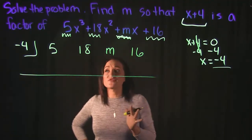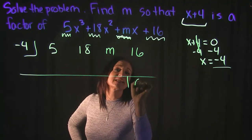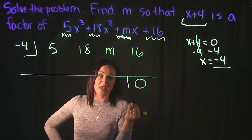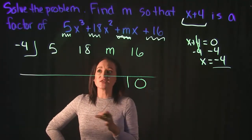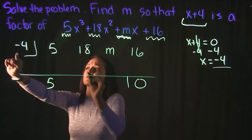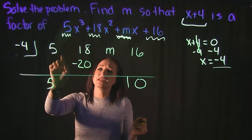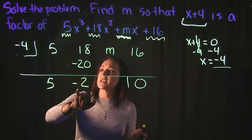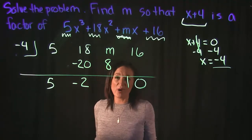If negative 4 is a factor of this, remember we want to get 0 in the final spot, because that's what will tell us this is indeed a factor. So let's drop down 5. In synthetic division, we then do 5 times negative 4, which is negative 20. Then we add this column: 18 plus negative 20 is negative 2. Then we repeat: negative 2 times negative 4 is 8.